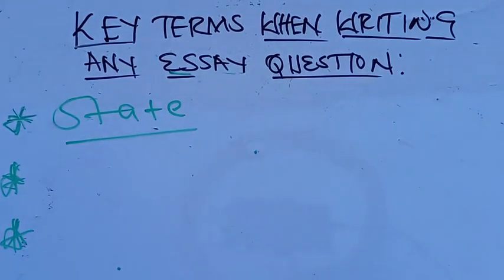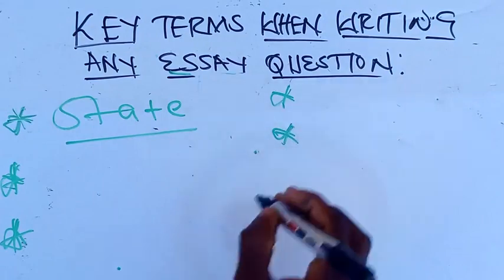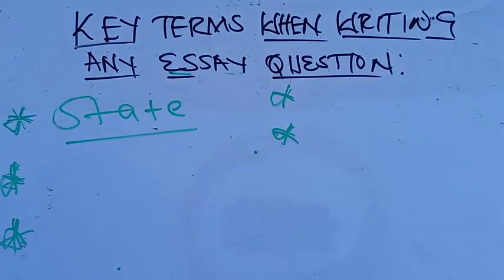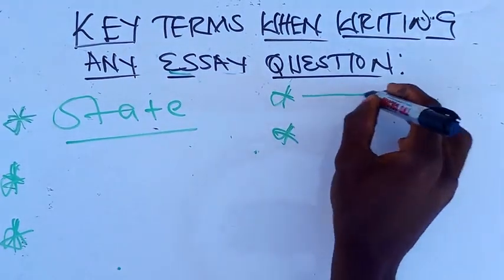There are some questions whereby you've been asked to state something. What it means when they tell you to state: there is no need to start explaining. All you need to do is just to write the answers in point form. For example, if you've been asked to state the causes of substance abuse, when talking about civic education, just give peer pressure.